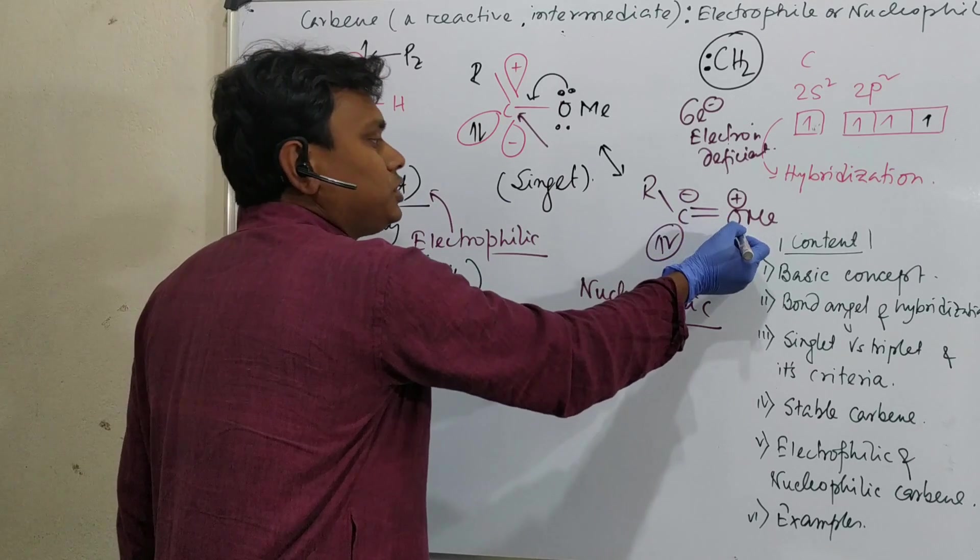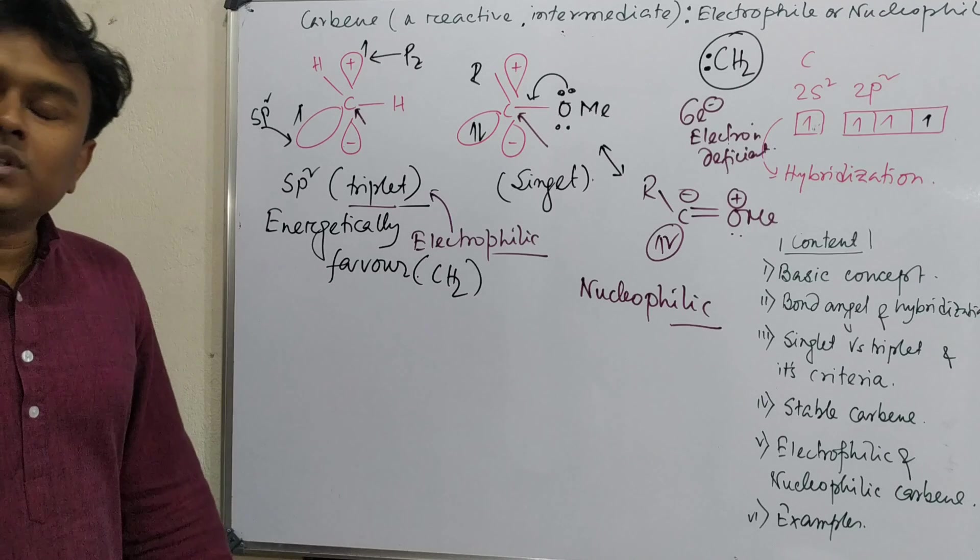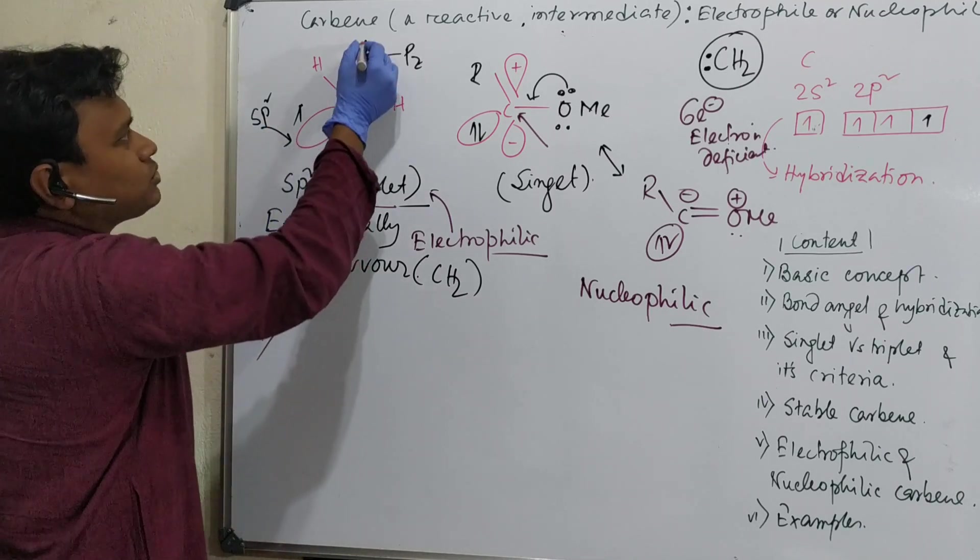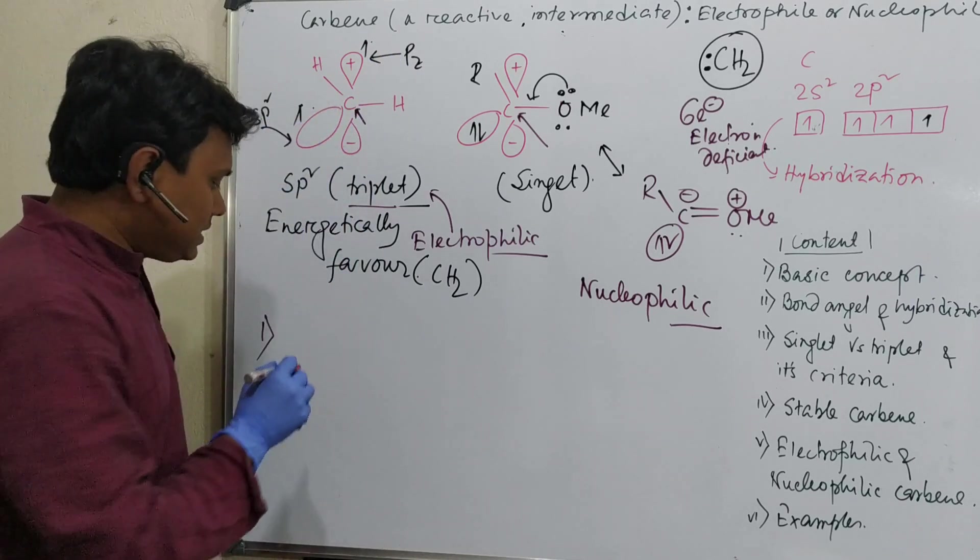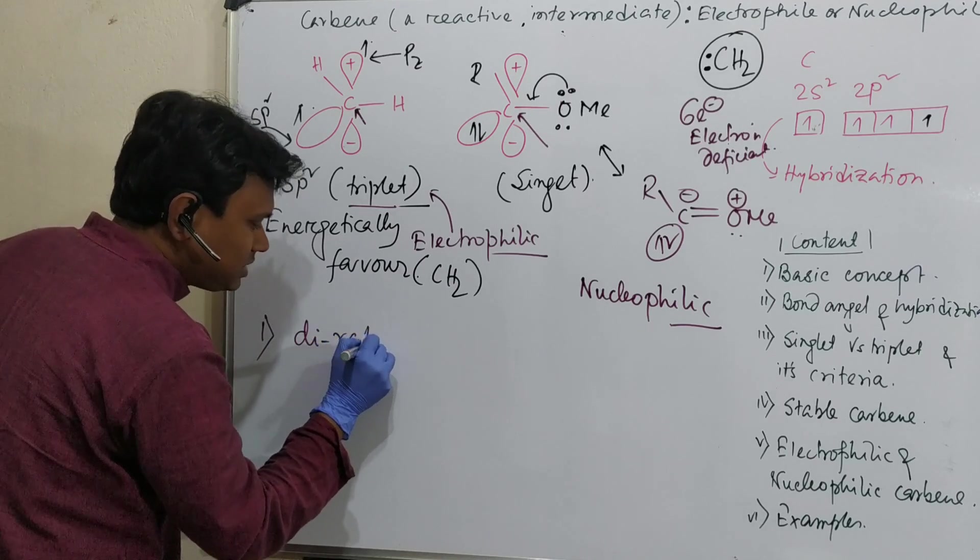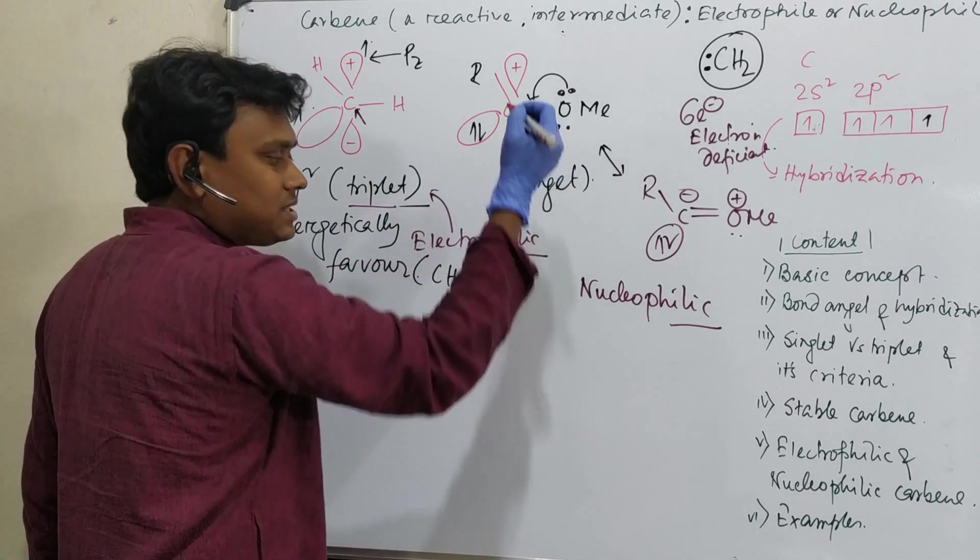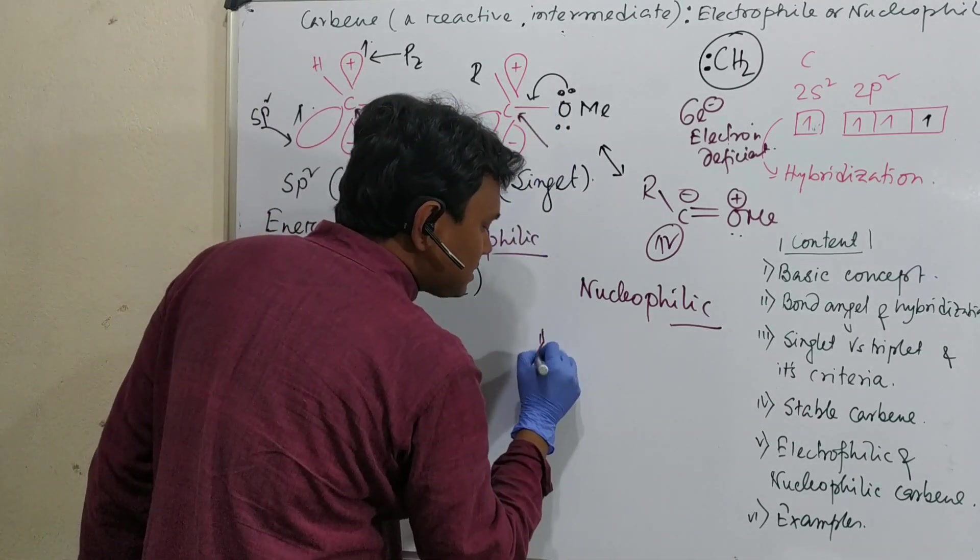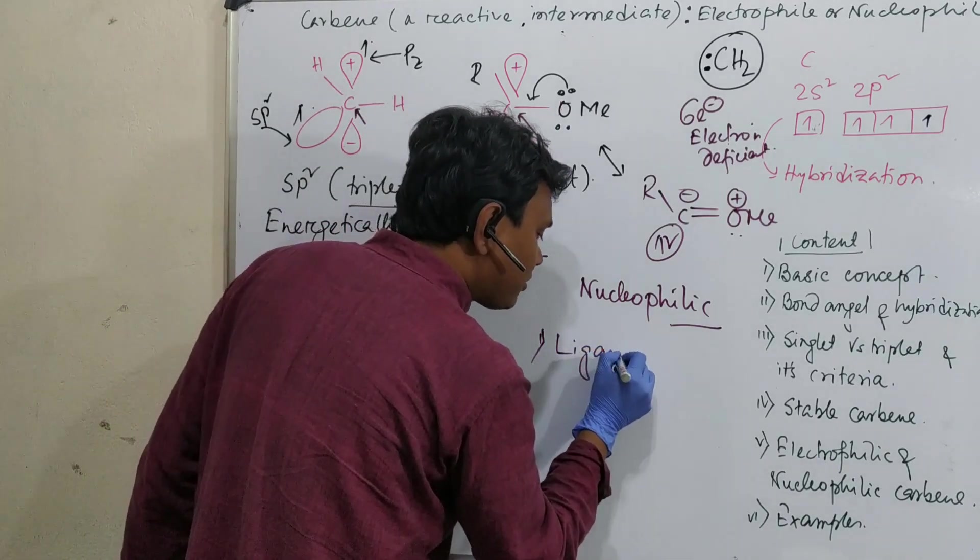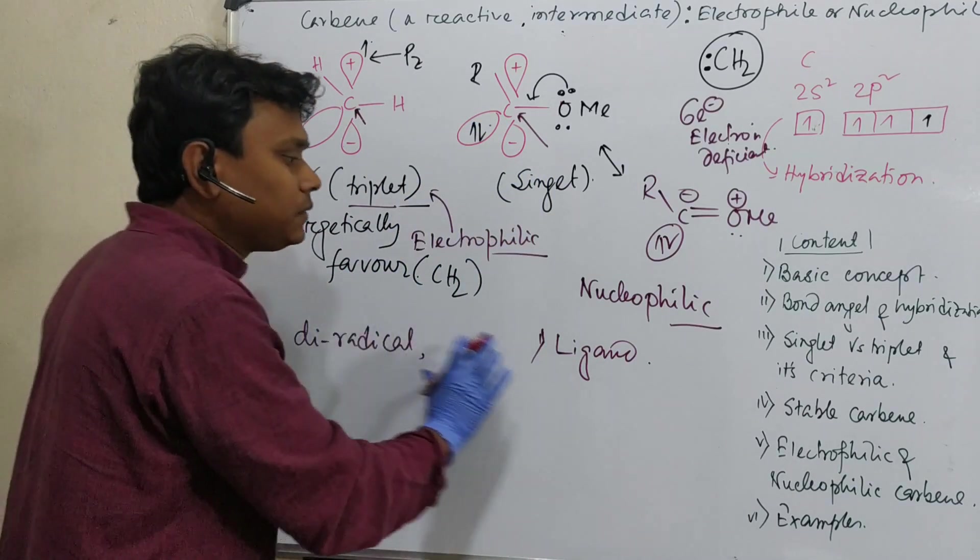So this is the difference of triplet versus singlet. This substitution is stabilizing the singlet. If you think another property, see here: these two electrons are in two orbitals, so this can act as di-radical. But what about singlet? This can act as nucleophile or ligand, not radical, because the electrons are paired up.